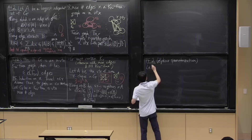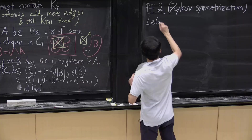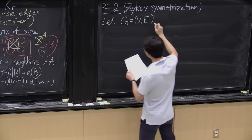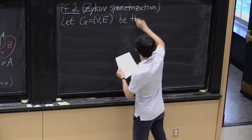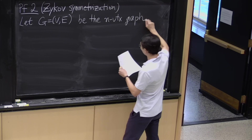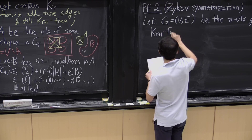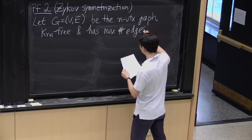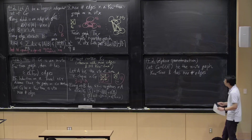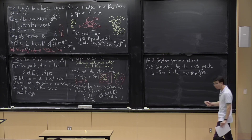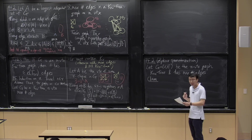Let G be an n-vertex graph that is K_{r+1}-free and has the maximum number of edges. Here's a property I want to prove: I claim that the complement of this extremal example must be an equivalence relation. More precisely, if xy is a non-edge and yz is a non-edge, then xz must also be a non-edge. So non-edges form an equivalence relation.